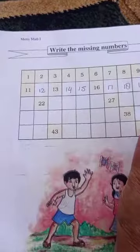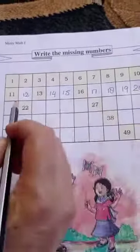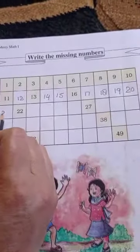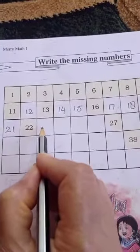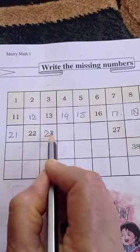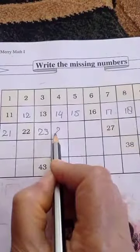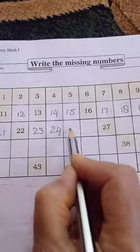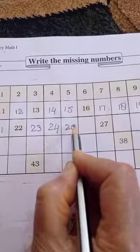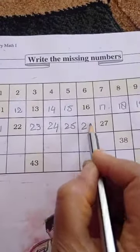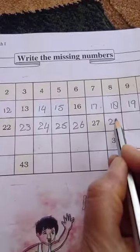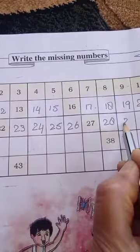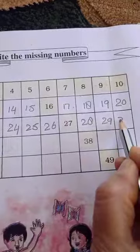20, 21, 22, 23, 24, 25, 26, 27, 28, 29, 30.